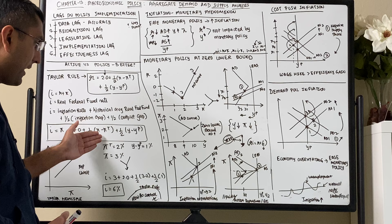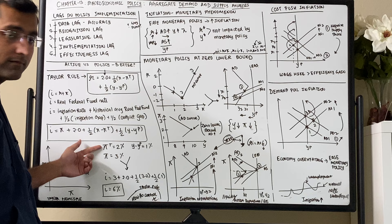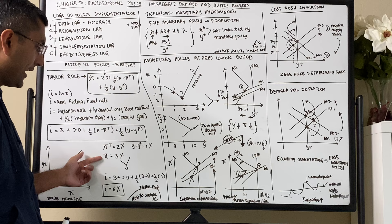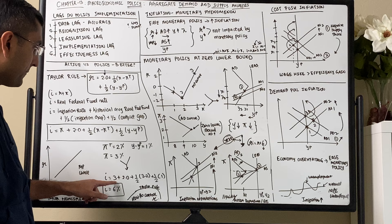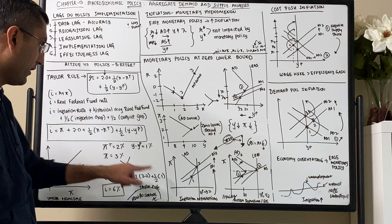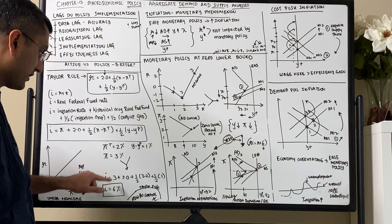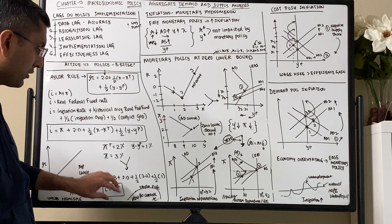Let's take an example. Say today the Federal Reserve's inflation target is 2%, actual inflation is 3%, and the output gap is 1%. Plugging into the equation: I equals 3 plus 2 plus half of (3 minus 2) plus half of 1, which gives us 3 plus 2 plus 0.5 plus 0.5, so I equals 6%. Taylor's Rule tells us how to control R using I, the Federal Fund Rate.